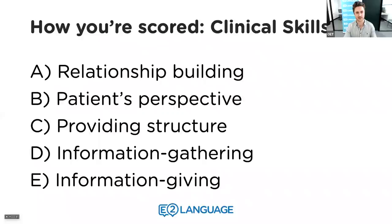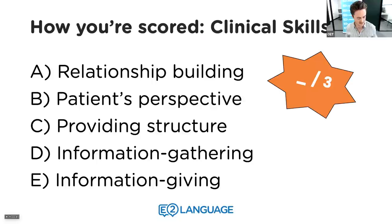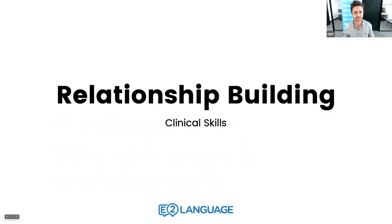There are five major clinical skills criteria: relationship building, patient's perspective, providing structure, information gathering, and information giving. Each has sub-criteria and is scored out of three — lower than language skills individually, but there are more of them, so it's just as important, if not more so.